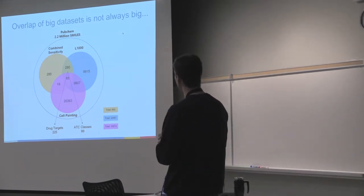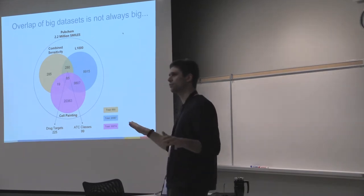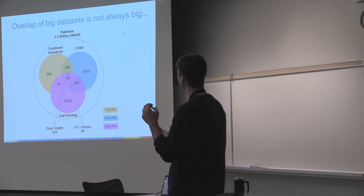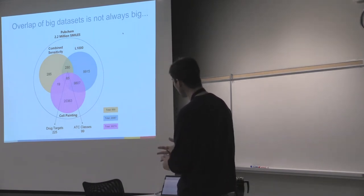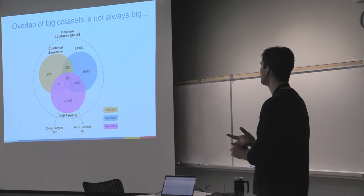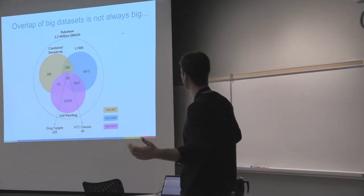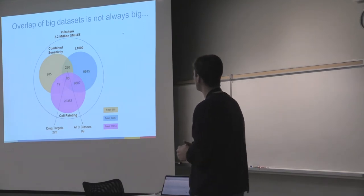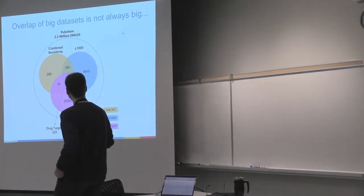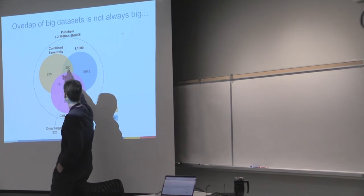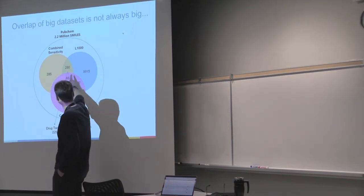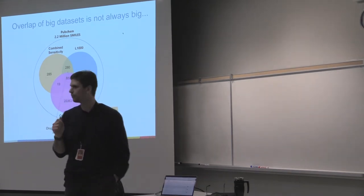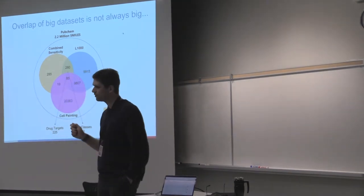As you can see, if you want the structure, that's no big deal — we have structure for all the drugs. But if you look at drugs for which we have sensitivity, perturbation, and imaging data, even though you start with thousands, you only have 85 in common. That's why I'm going to ignore cell painting and just look at this overlap. Out of those 280 drugs, we have annotated drug targets for almost all of them, and ATC classes — anatomical therapeutic classifications — which essentially categorize what a drug does clinically.